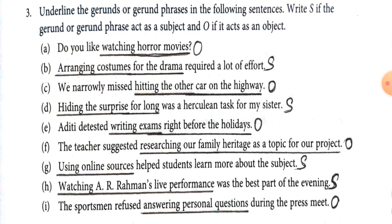Number I: The sportsman refused answering personal questions during the press meet — here, answering personal questions is the object of the verb refused. So, students, with the help of that exercise, we have learned that gerunds function as subject and object in a sentence.